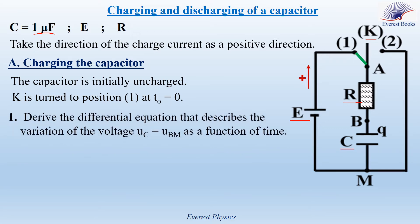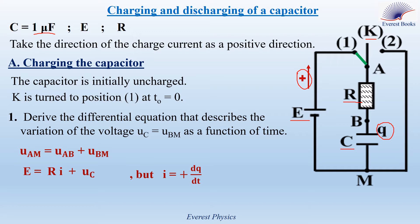Part 1: Derive the differential equation that describes the variation of the voltage UC equal UBM as a function of time. Applying Kirchhoff's voltage law: UAM equals UAB plus UBM. UAM equals E, and the positive sense is oriented from A to B, then UAB through the resistor equals R times I, and UBM is taken as UC. The positive sense enters the capacitor through the plate of charge Q, then I equals plus dQ by dt. But Q equals C times UBM, or equals C times UC.